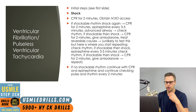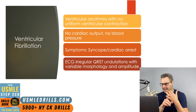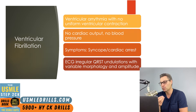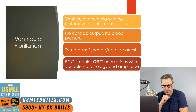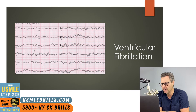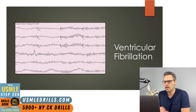We've already reviewed V-tach, so let's discuss V-fib for a second. V-fib is a ventricular arrhythmia with no uniform ventricular contraction. This loss of uniformity results in a heart producing no cardiac output and no blood pressure. Symptoms of V-fib include syncope and cardiac arrest. The ECG is going to show irregular QRS undulations with variable morphology and amplitude — those irregular shapeless QRS undulations of variable amplitude and morphology. It kind of looks like torsades, but you're missing a twisting of the QRS complex.